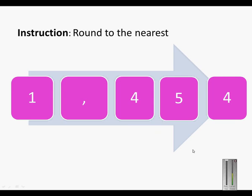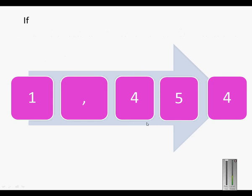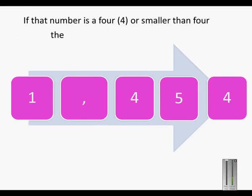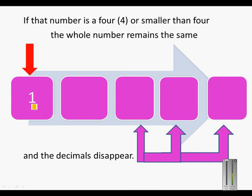The new instruction is round to the nearest whole number — so we just want a number with no decimals. We look at the first decimal. Because this is a four, it will not influence the one. If the first decimal is four or smaller, the whole number will remain the same. So the number one will stay a one and all the decimals will disappear.